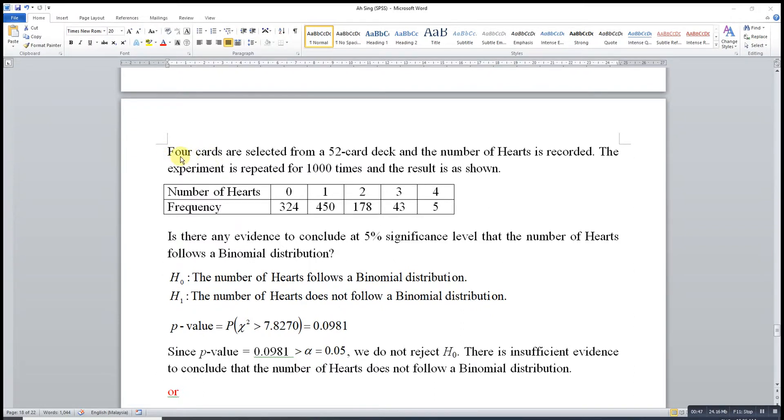So n is equal to 4 and our concern here is hearts. We have 13 hearts out of 52, which means 13 over 52 equals 0.25 as the success rate. Let's get started.